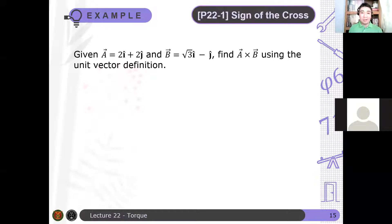Let's apply what we learned so far in this problem. The topic is the sign of the cross product. Given A is 2î + 2ĵ, and B is √3î - ĵ, find A cross B using unit vector notation.